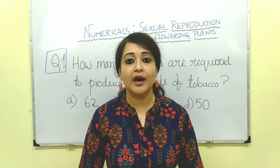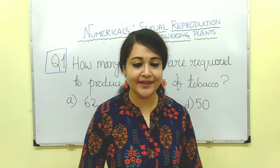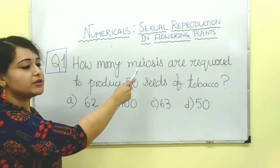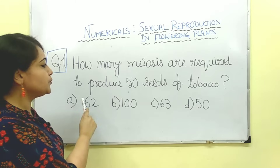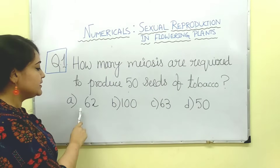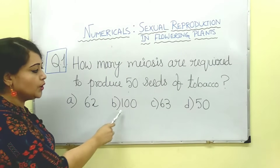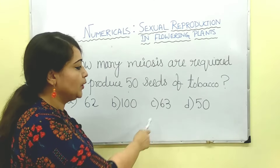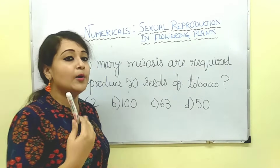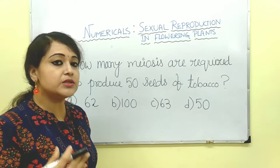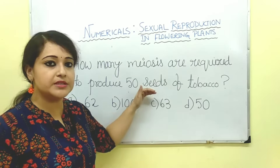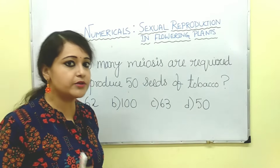Let us start with our first numerical. How many meiosis are required to produce 50 seeds of tobacco? Option A is 62, option B is 100, option C is 63, and option D is 50. How many meiotic divisions would be required to produce 50 seeds of tobacco? Let us try to solve it.